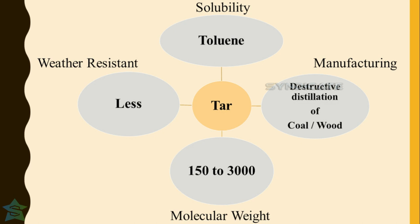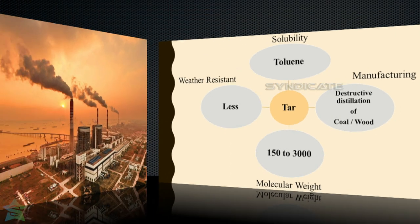Meanwhile, tar is produced by destructive distillation of coal or wood and is soluble only in toluene, a chemical also called methyl benzene. The reason tar is not used nowadays is that tar is highly temperature susceptible — meaning its behavior changes abruptly with respect to changes in temperature compared to bitumen — and it emits more CO₂, which is more health hazardous.